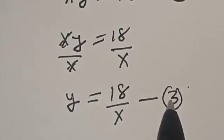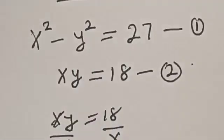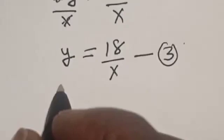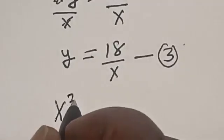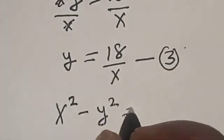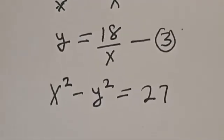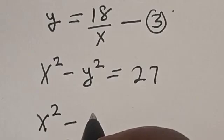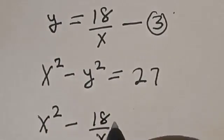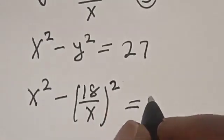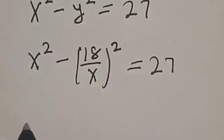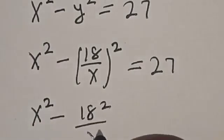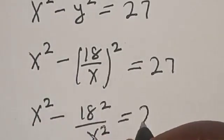Now substitute equation 3 into equation 1. That is, anywhere you see y, put 18 divided by x. So equation 1 becomes: x squared minus (18 divided by x) squared is equal to 27. This gives x squared minus 18 squared divided by x squared is equal to 27.